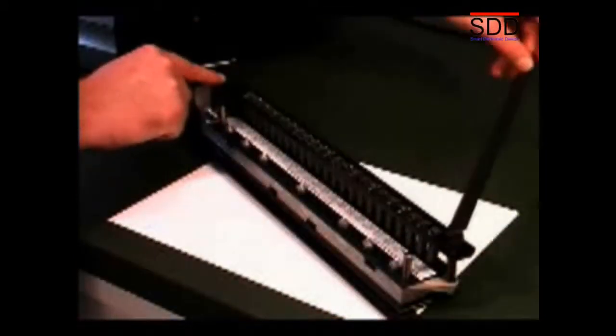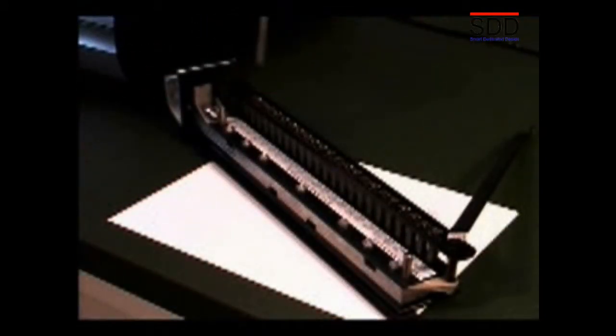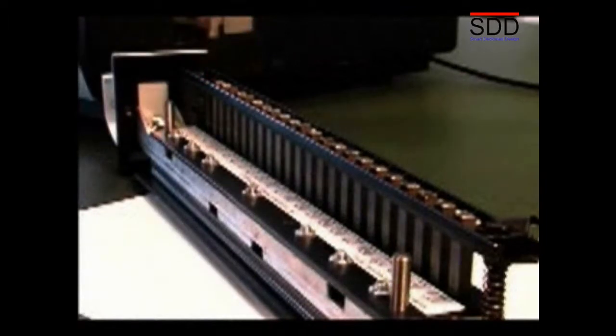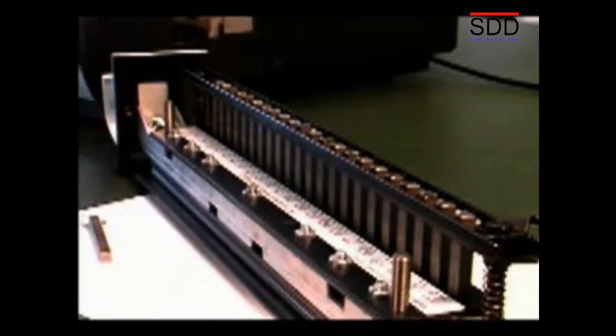With interchangeable die punches, knowing what pins to pull for different size documents can be challenging. All MP2500IX die sets feature GBC's pull pin labels. These labels provide a quick guide for the user on what pins to pull for most standard document sizes.